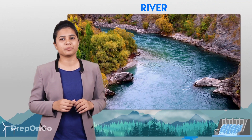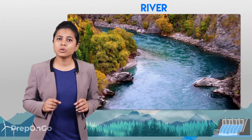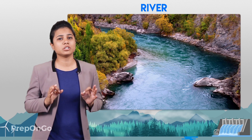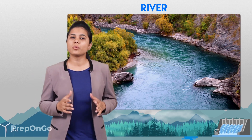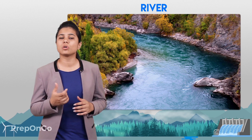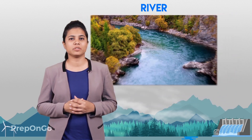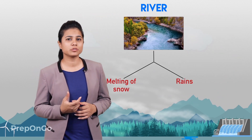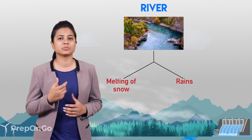Another important source of water is the river — in fact, the second most important source. The water that we drink at home is also supplied by rivers. Rivers get their water through the melting of snow from mountain peaks as well as from rains.